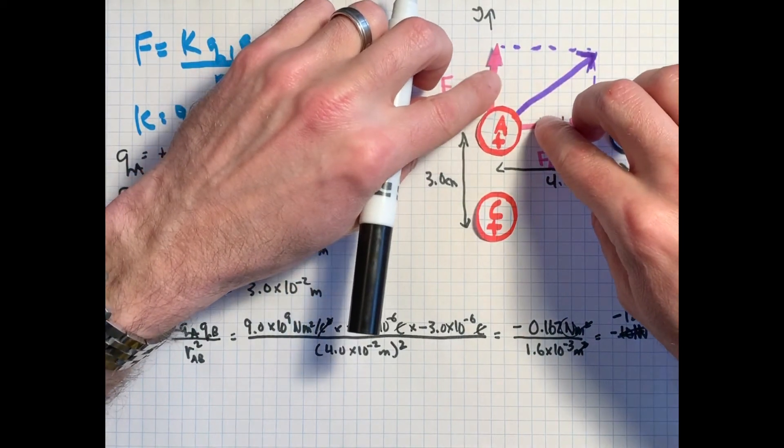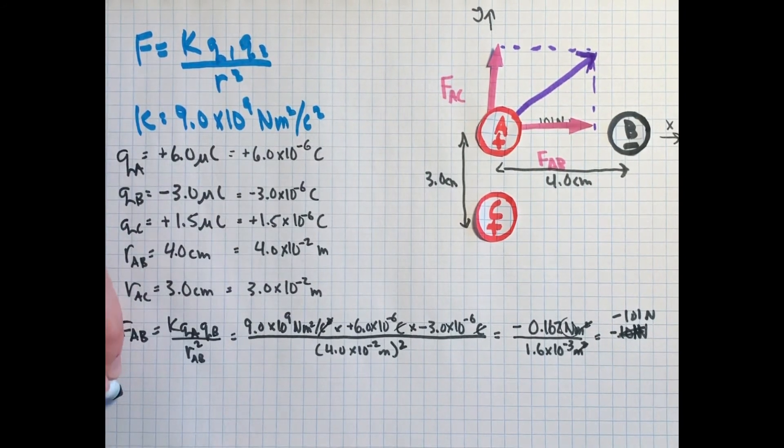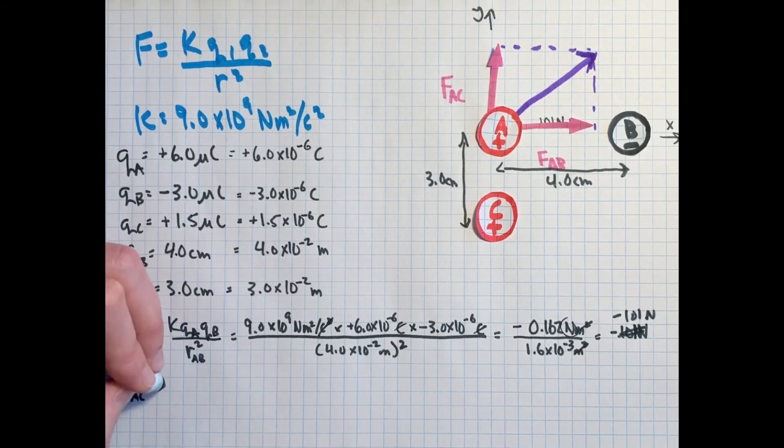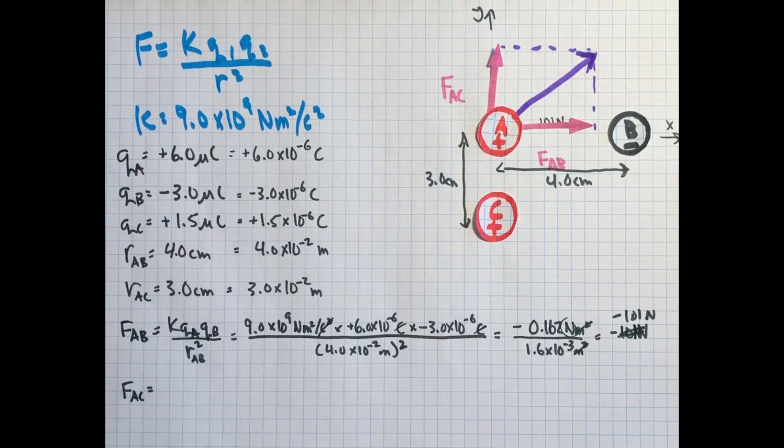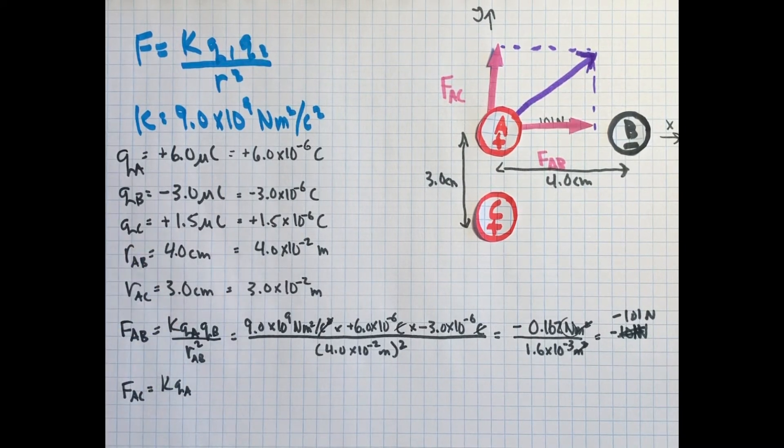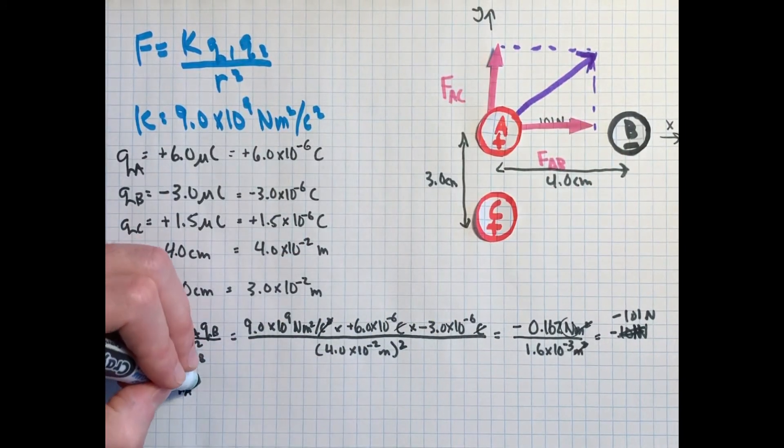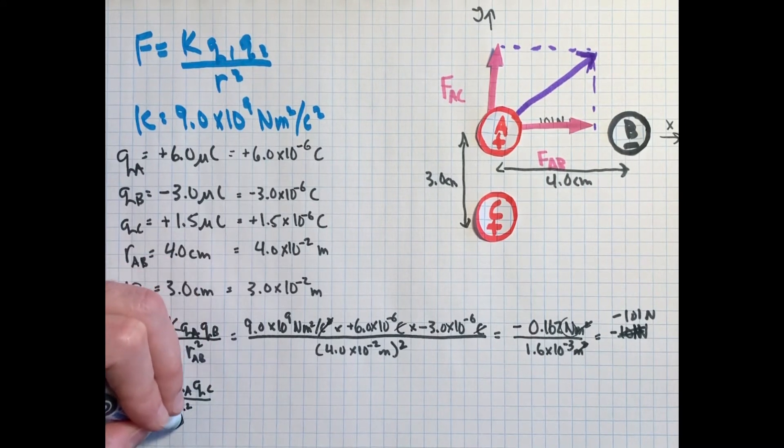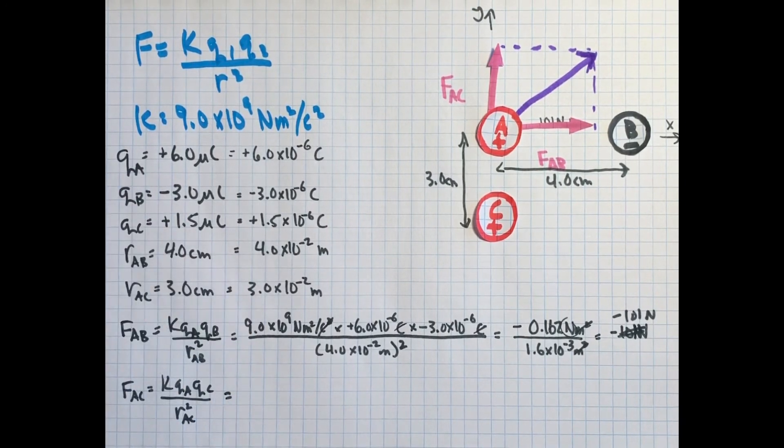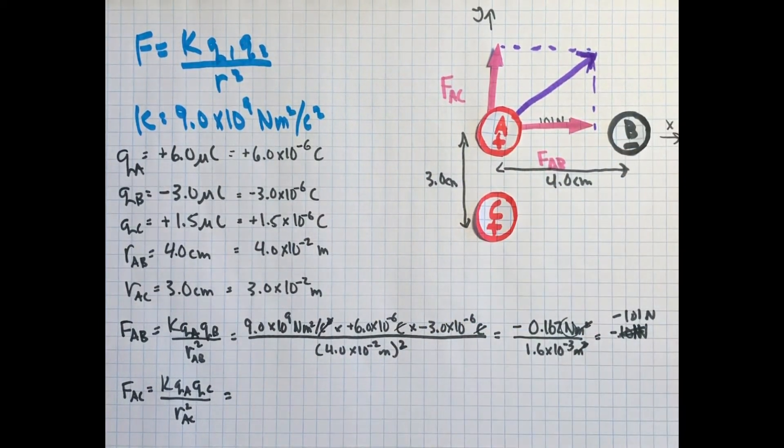But we need to find the force from C, which, because these are both positive, will be repulsive. So we do the exact same thing. We go through all this math again, and that's the tedious part of this. But once you practice enough, this becomes quite straightforward. So we take our K again, KQA again, because A is the one we're concerned with. We're asked about the force on A. We could easily do B and C if we wanted to know the force there, but we're not asked about it, so we're not going to bother. This time we're going to do QC all over the distance between those two charges.